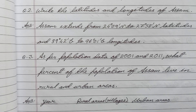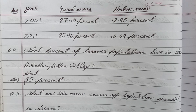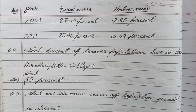Question number three: As per population data of 2001 and 2011, what percent of the population of Assam live in rural and urban areas? Answer: In 2001 — rural areas 87.10 percent, urban areas 12.90 percent. In 2011 — rural areas 85.90 percent, urban areas 14.09 percent.